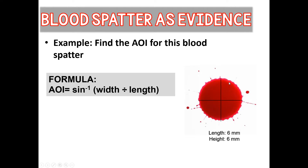For another example: if an investigator sees a stain that's pretty circular, it's likely a passive or gravitational drop close to a 90-degree angle. If the length is 6 millimeters and the width is 6 millimeters, you plug it into the formula: 6 divided by 6 equals 1, and the inverse sine of 1 is 90 degrees. This confirms the blood hit the surface at a 90-degree angle.